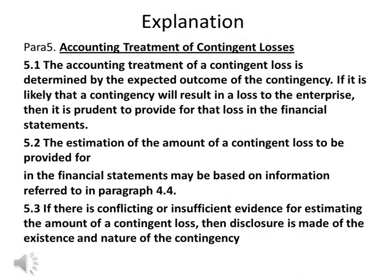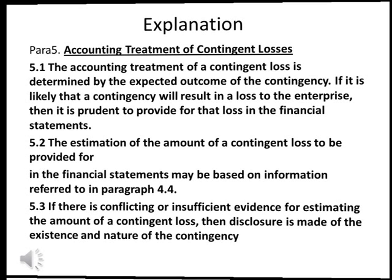Para 5. Accounting treatment of contingent losses. Para 5.1: The accounting treatment of a contingent loss is determined by the expected outcome of the contingency. If it is likely that a contingency will result in a loss to the enterprise, then it is prudent to provide for that loss in the financial statements. Para 5.2: The estimation of the amount of a contingent loss to be provided for in the financial statements may be based on information referred to in paragraph 4.4. Para 5.3: If there is conflicting or insufficient evidence for estimating the amount of a contingent loss, then disclosure is made of the existence and nature of the contingency.